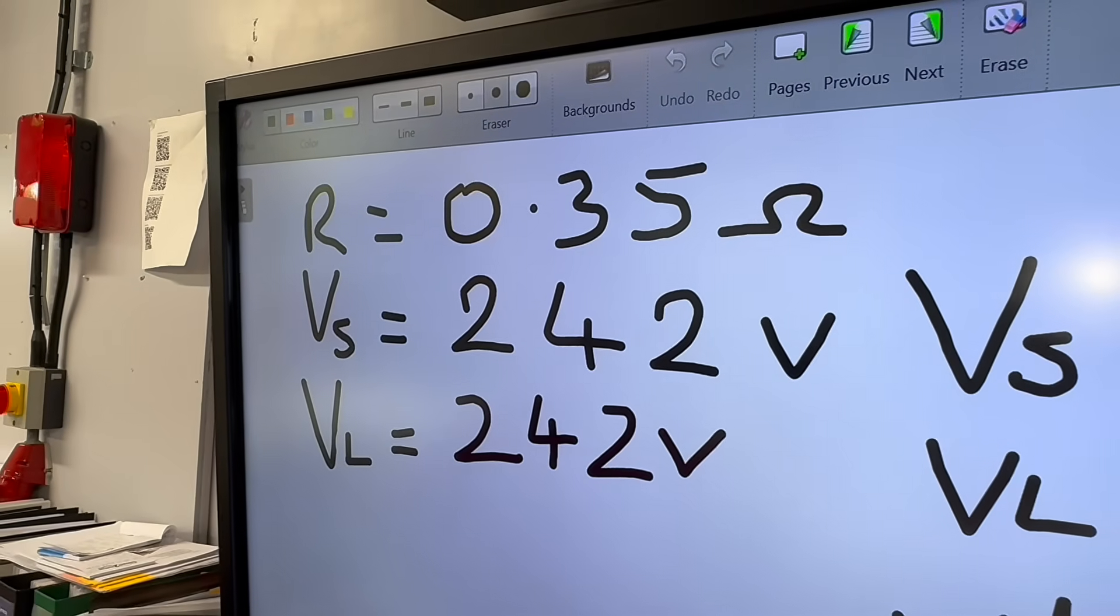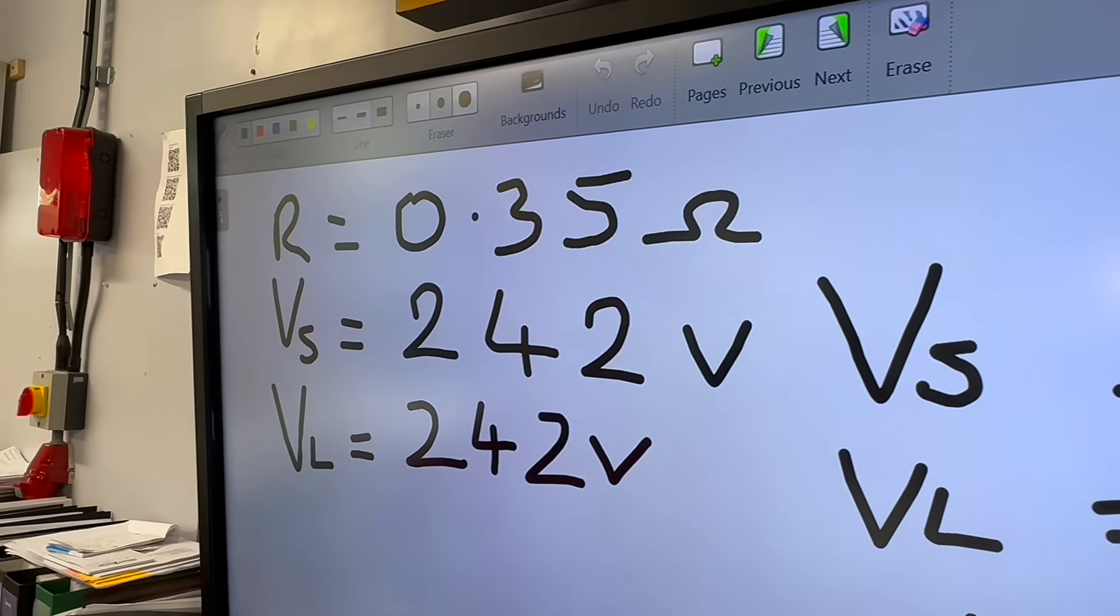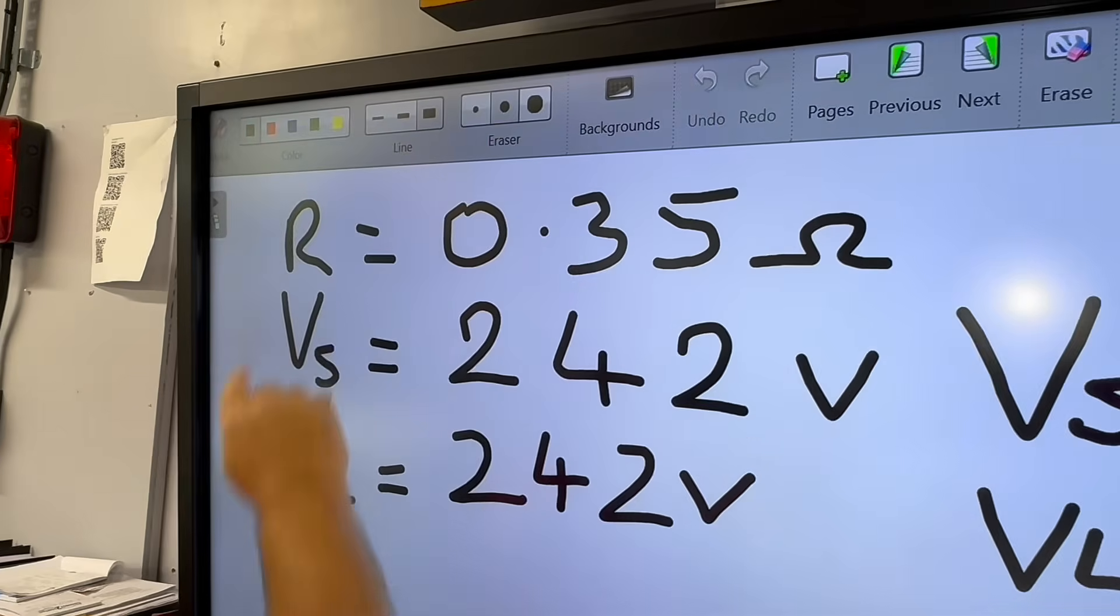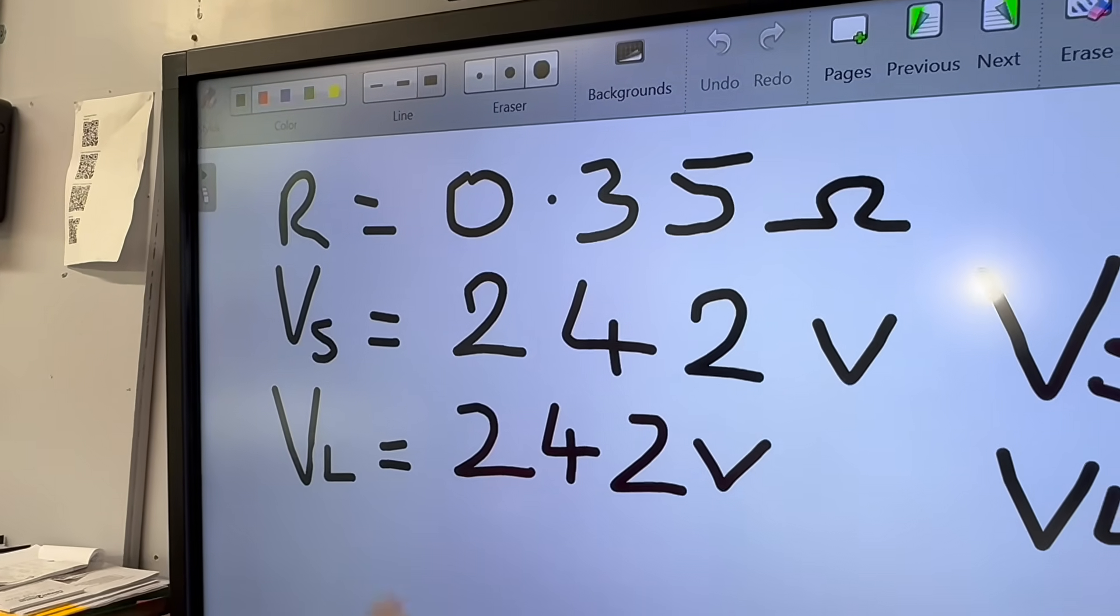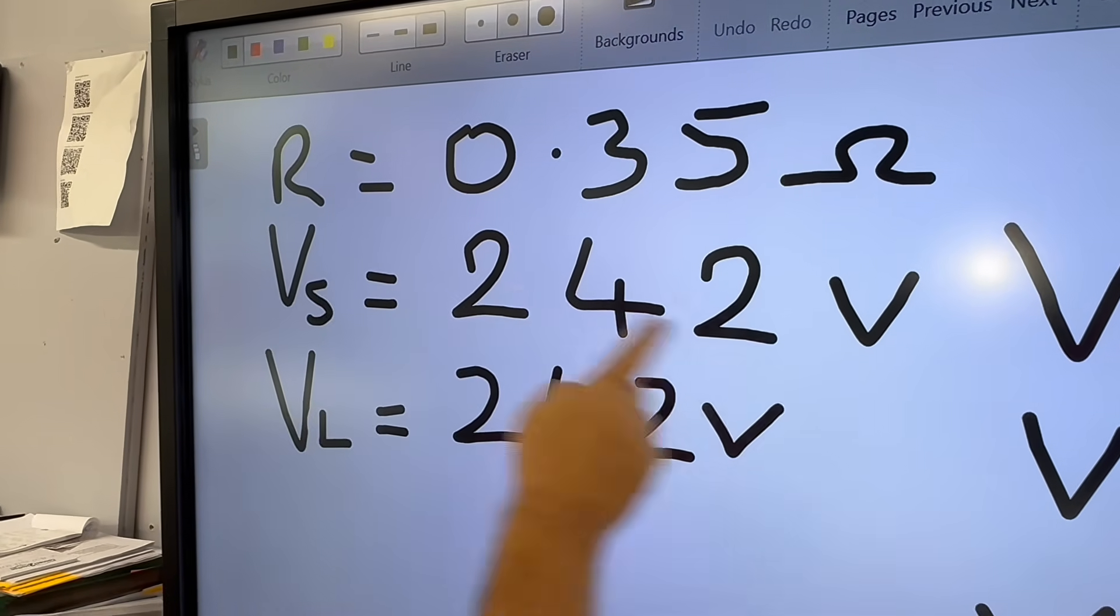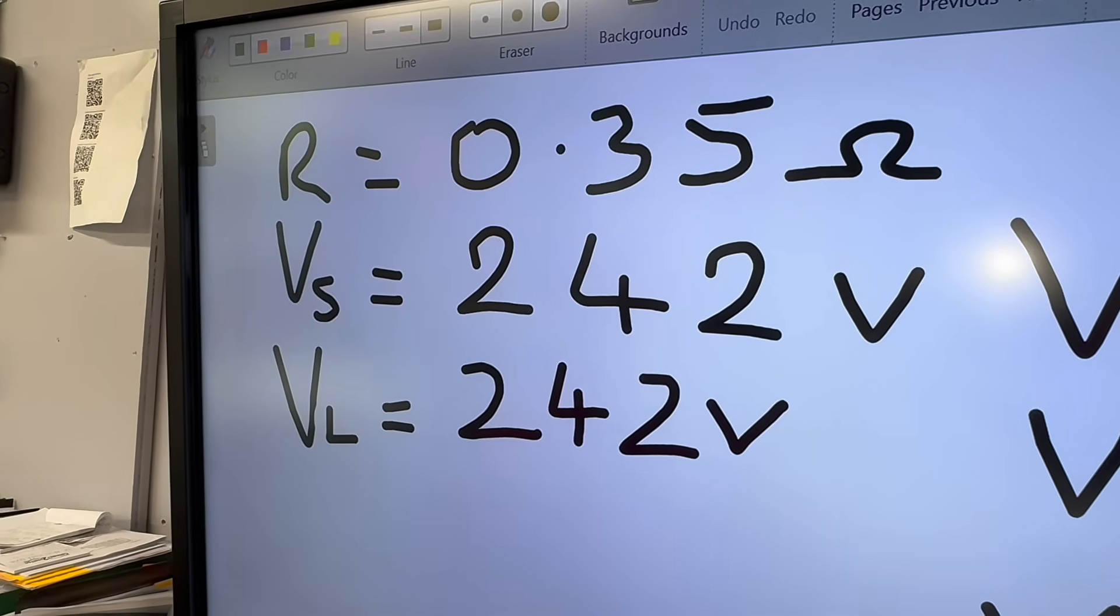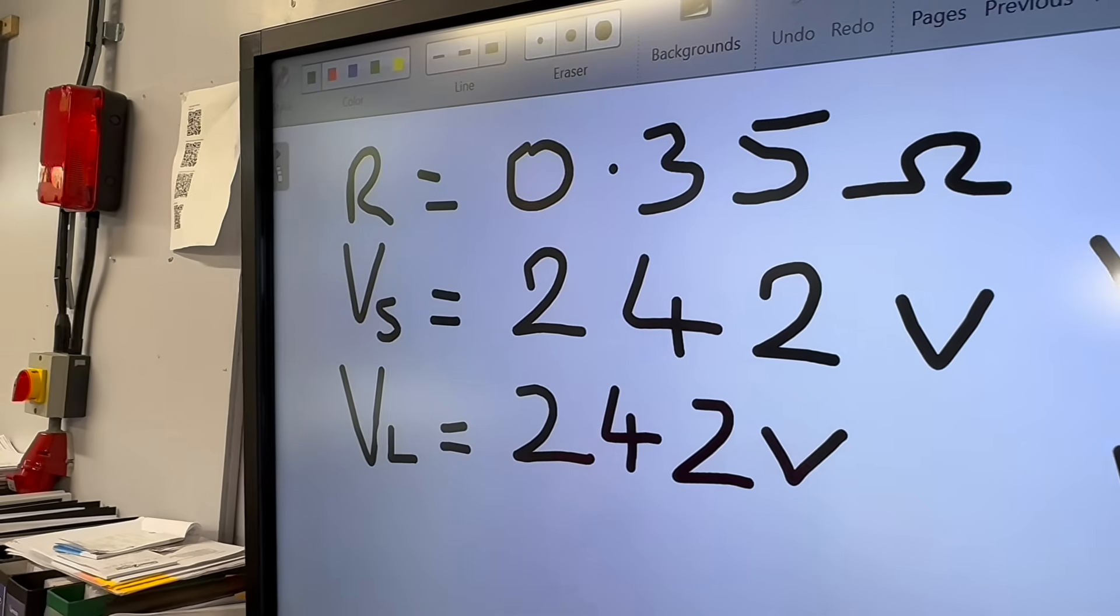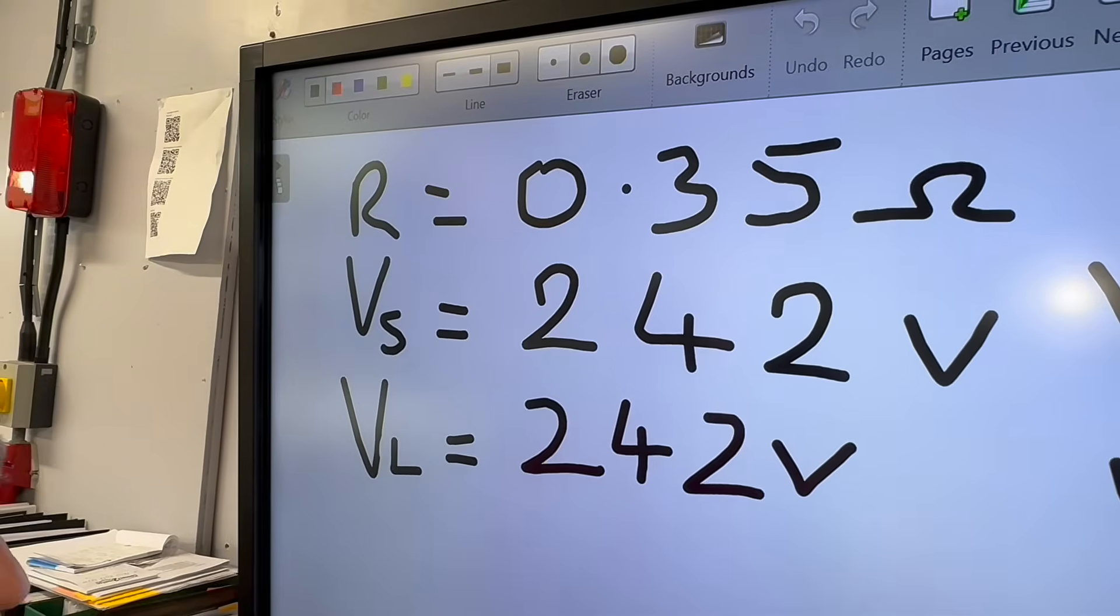We'll get the kettle out, we only get the tea bags. Going to use the power of maths to work out volt drop then, Chris. Just remind me of some of the values we've already achieved. We've got the resistance of the circuit, which was 0.35 ohms.